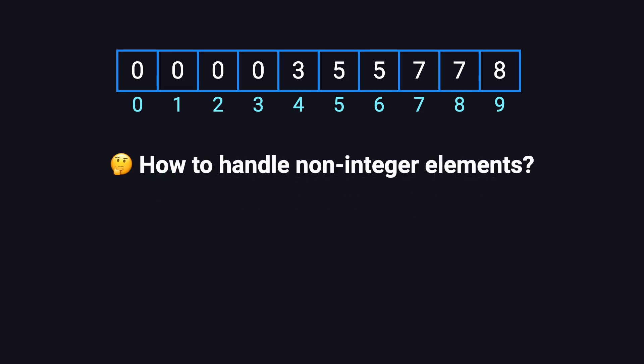Some of you might be wondering, what if the elements aren't integers? What if they're strings? Great question! It's actually no problem at all. We can simply use a hash map to assign each string a unique number, map them to array indices, and then apply the Union-Find structure just like before.